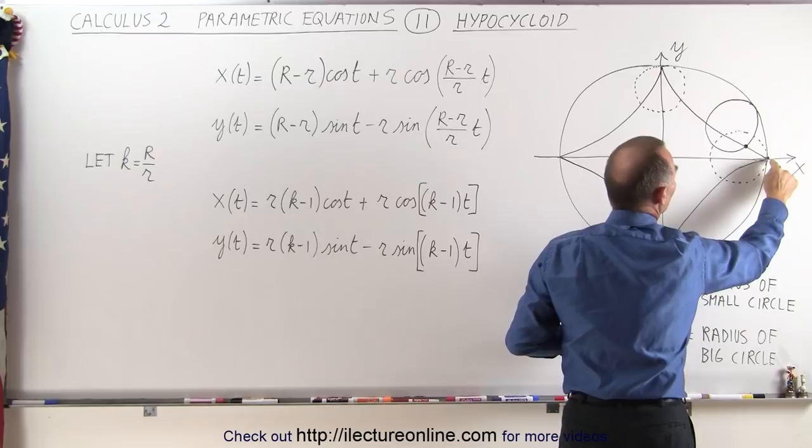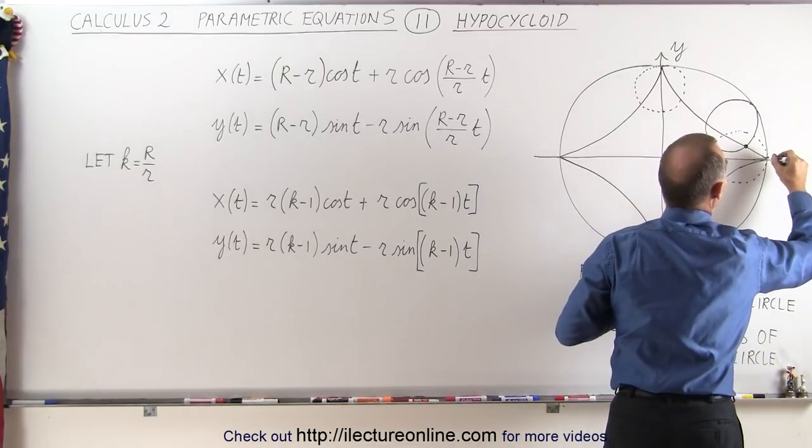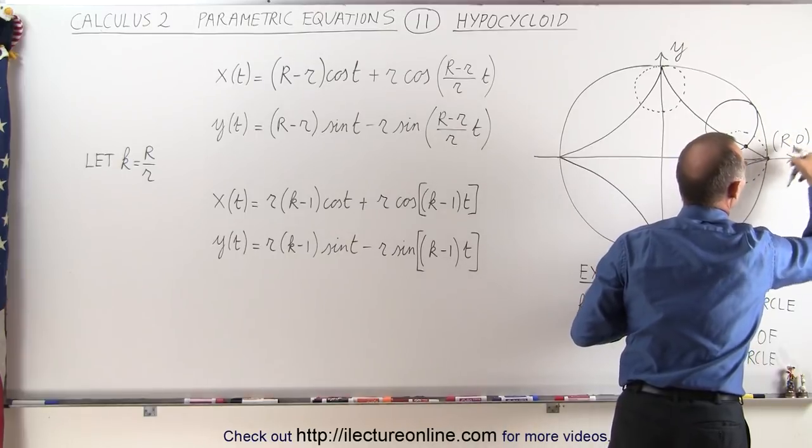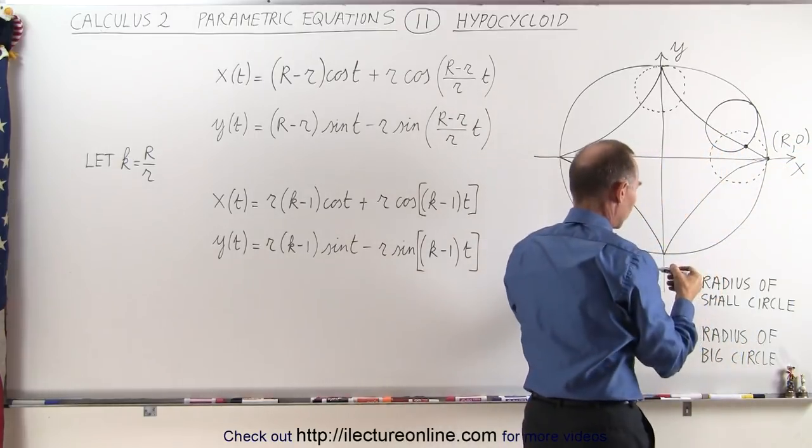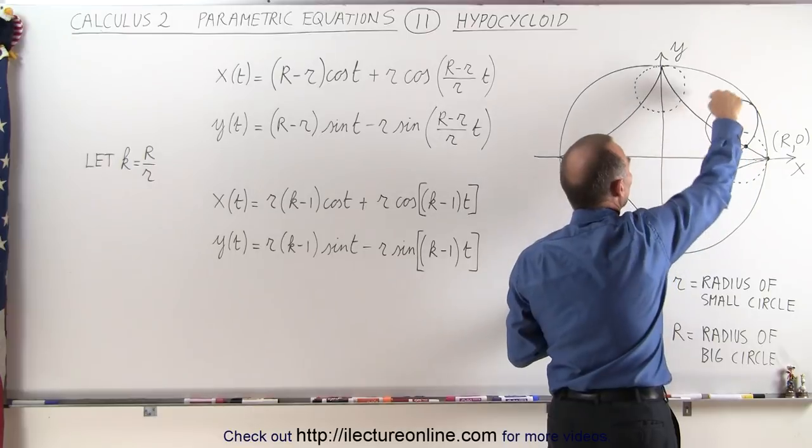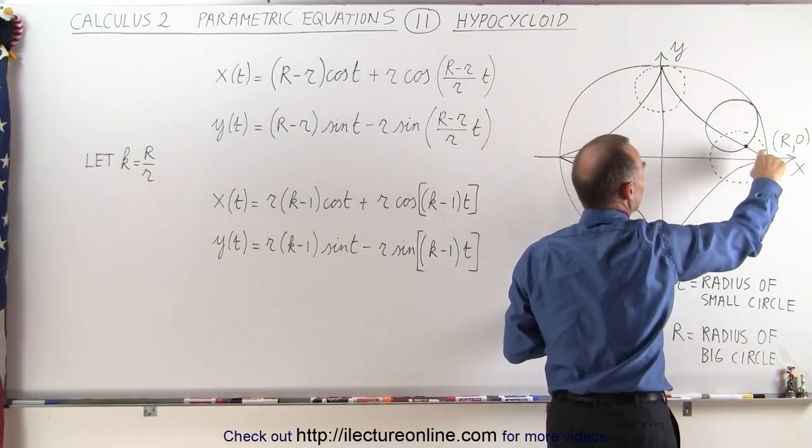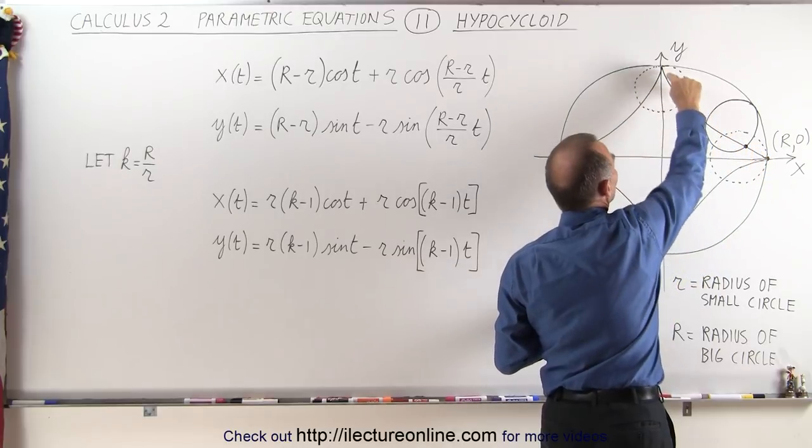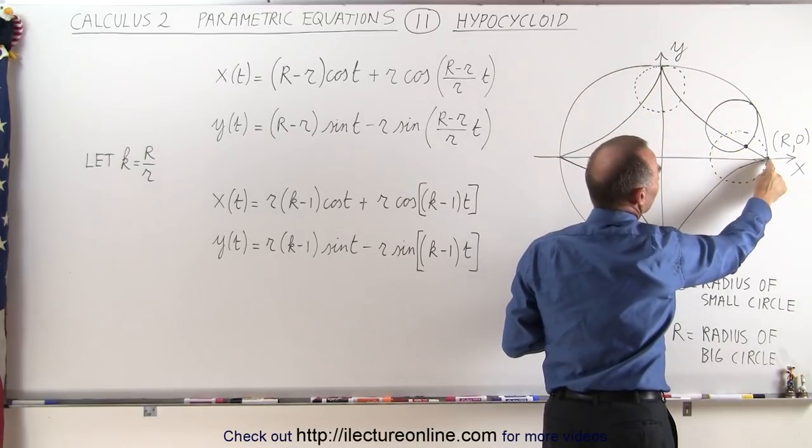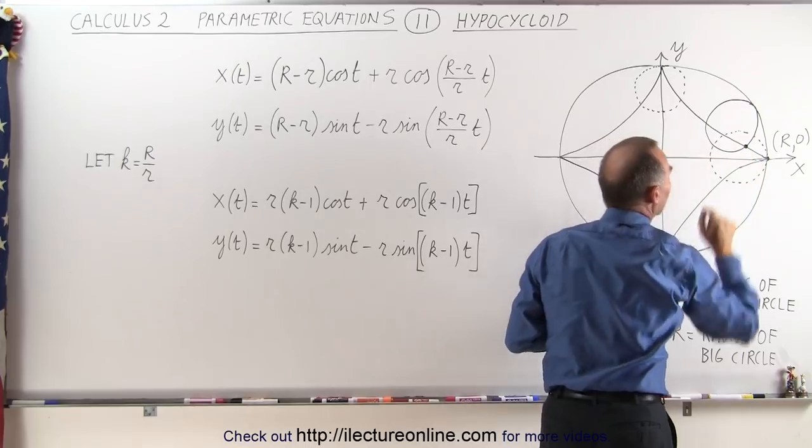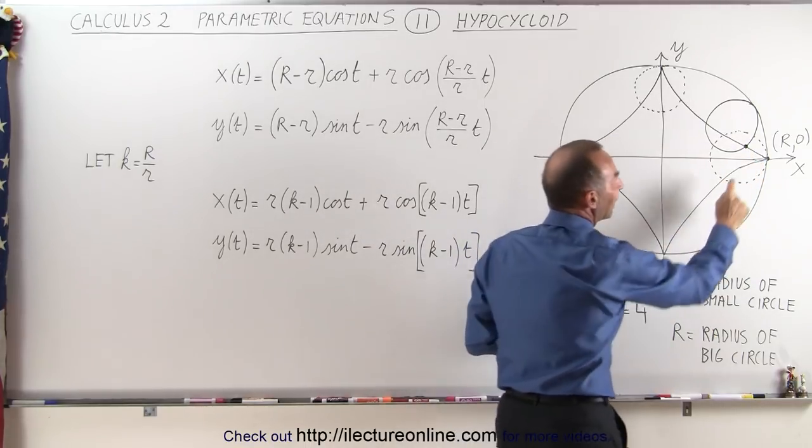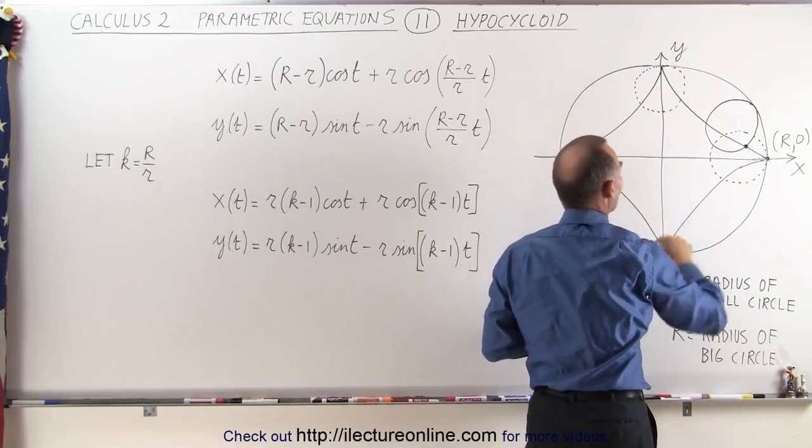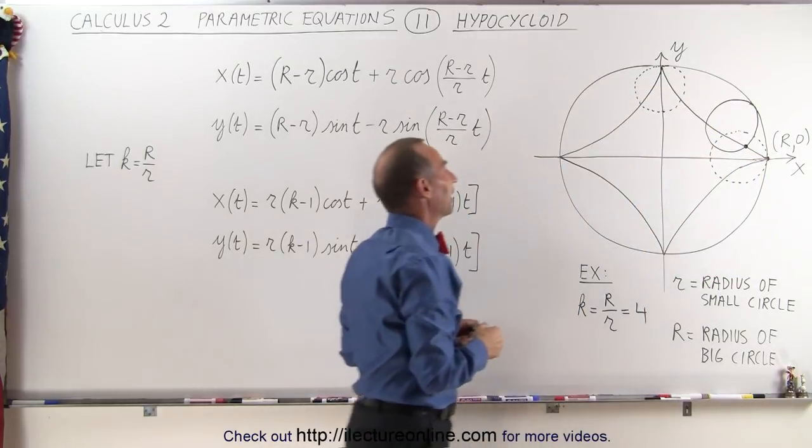So that would be 0 or actually the point right here starts at R, 0. So these are the coordinates of the point in the circle. And then as the wheel begins to rotate inside the big circle right here, then you can see that this point will slowly move along this line. You can see that this point that used to be right here is now located over there.